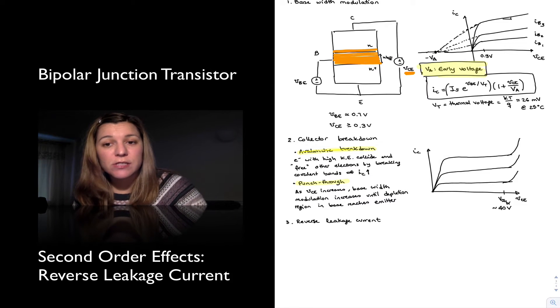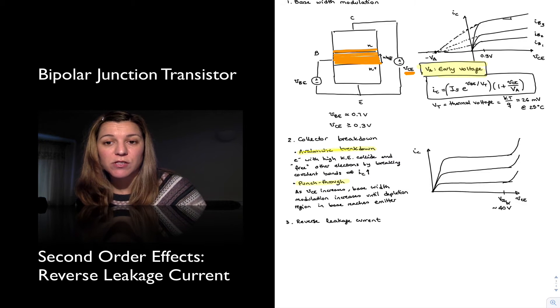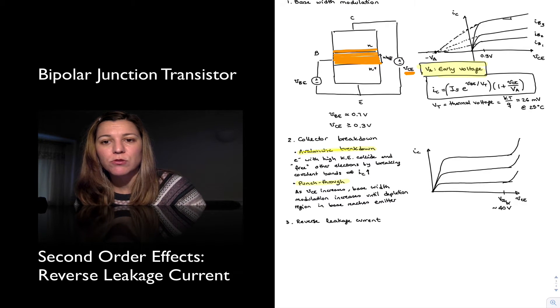When we turn off the transistor, we have talked about how the base current becomes equal to zero and the collector current becomes equal to zero, so no current flows through the transistor in cutoff.